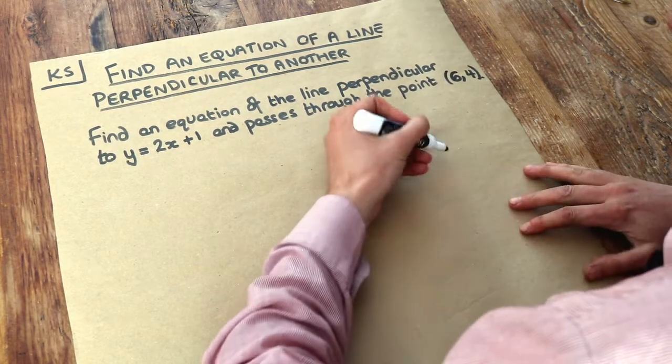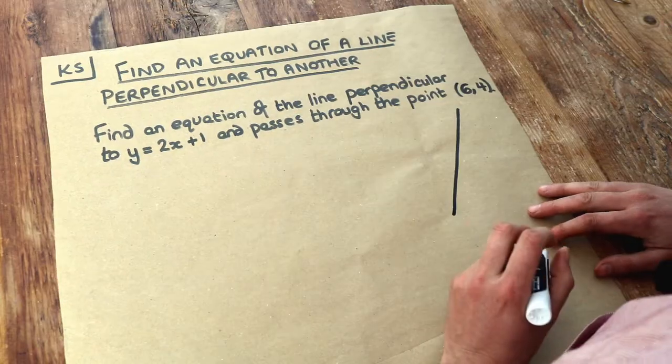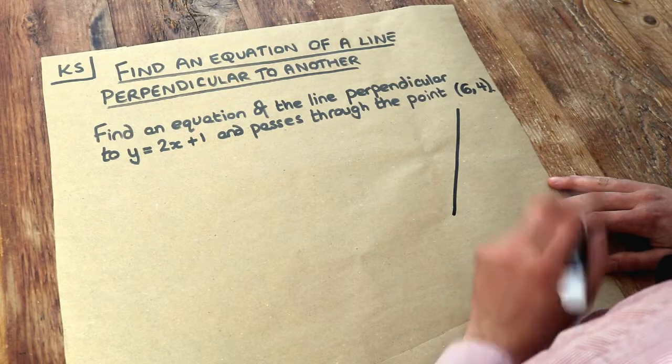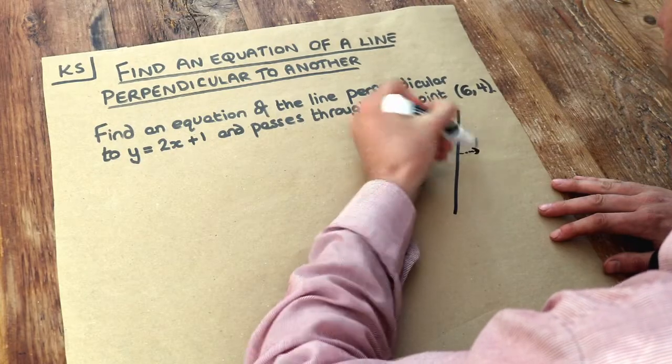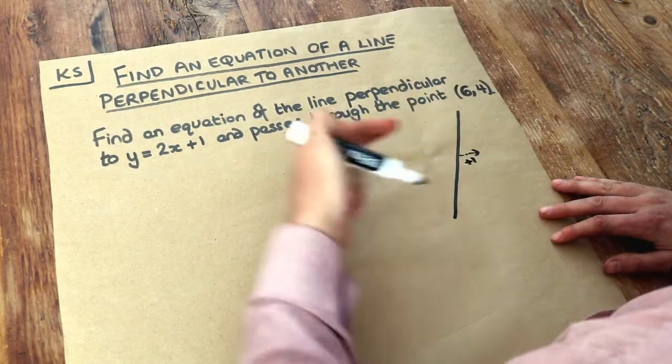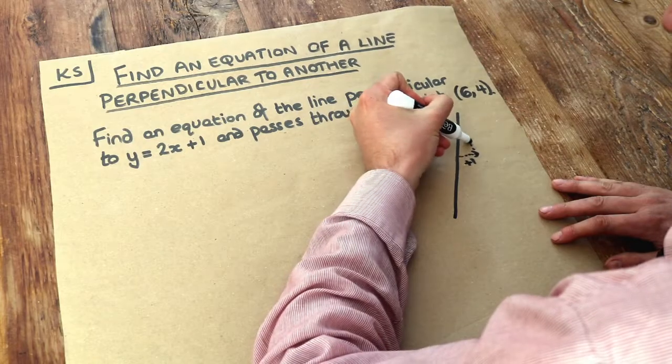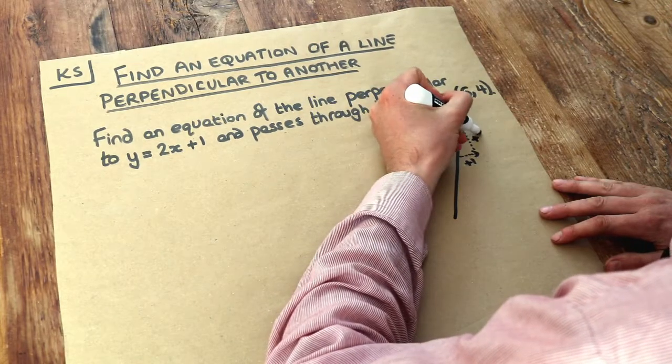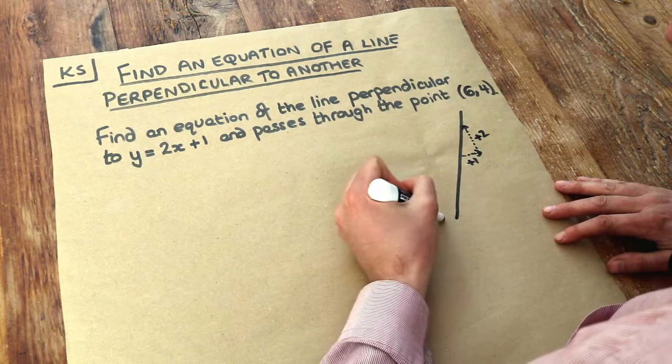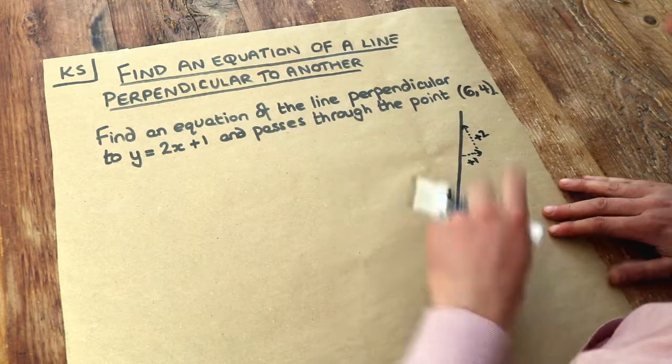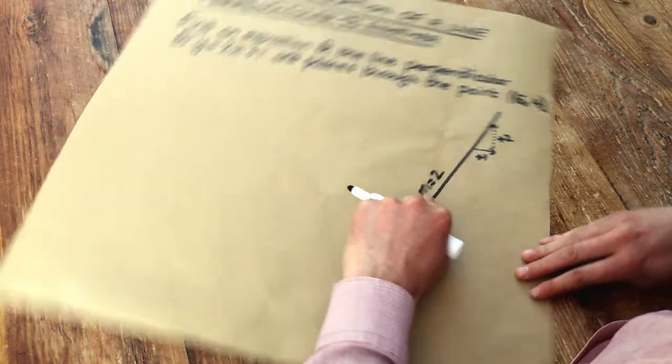Well what do we mean by perpendicular? Let's just say that we had a line. Now remember that the gradient of a line means how steep it is. More specifically, it means that each time x increases by 1, we go right 1, what is the y value changing by? So let's just say that the y value is increasing by 2 each time. So this would have a gradient of 2. And remember gradient we denote by the letter m.